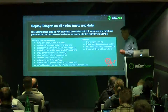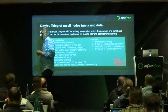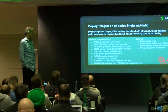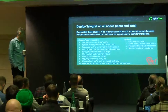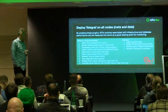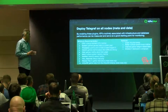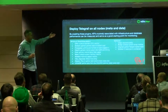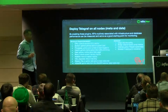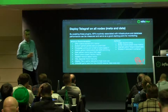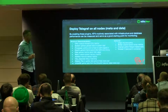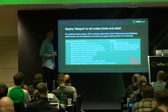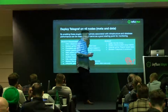We have Telegraf deployed on all nodes — both meta nodes and data nodes — and we're gathering all of these kinds of metrics off those hosts: CPU, system process, disk activity, memory, network, HTTP response times, file statistics, the specific InfluxDB stats, and then optionally, depending on the environment, logs, Docker metrics, and swap metrics. We look to make sure we're not exhausting the swap — and in some cases we've turned that off on lower instances for better performance.